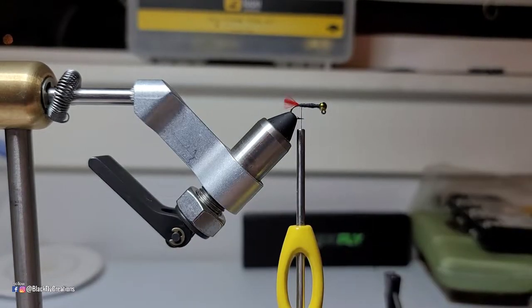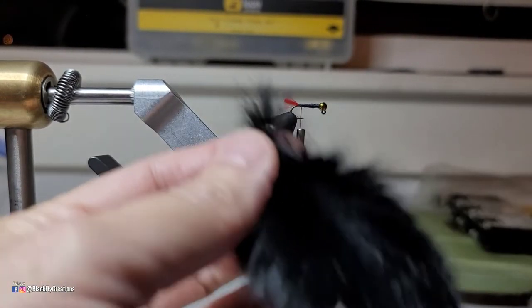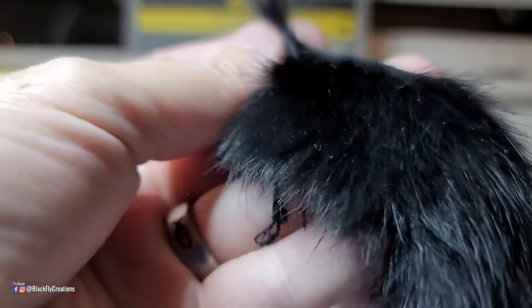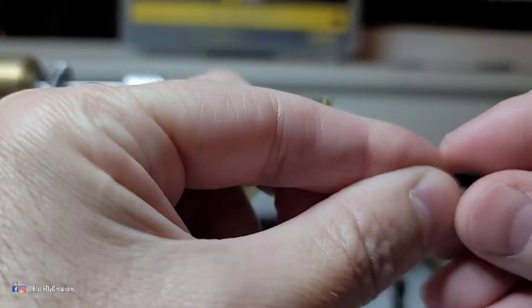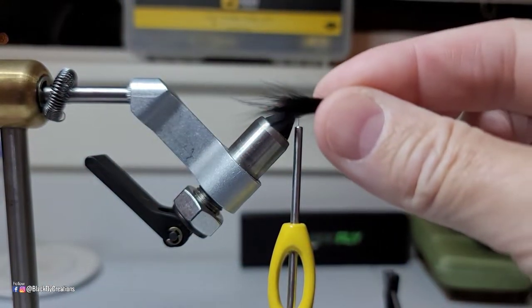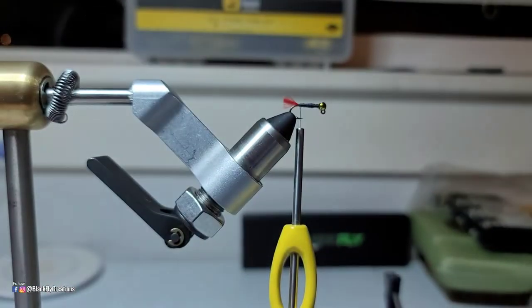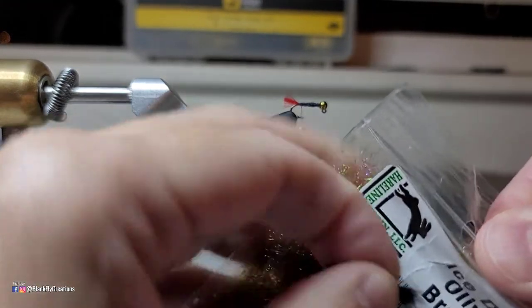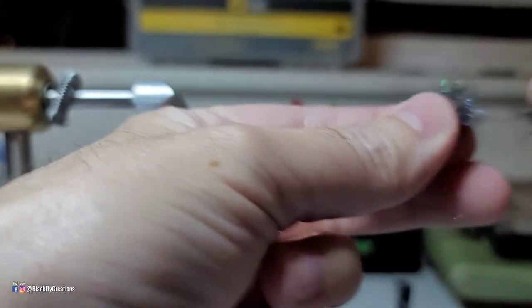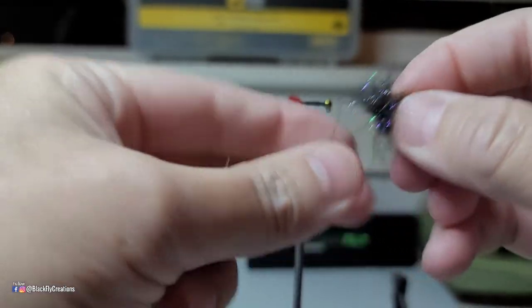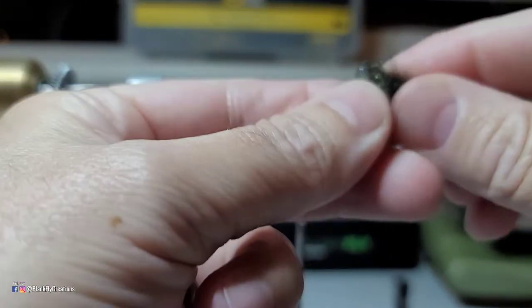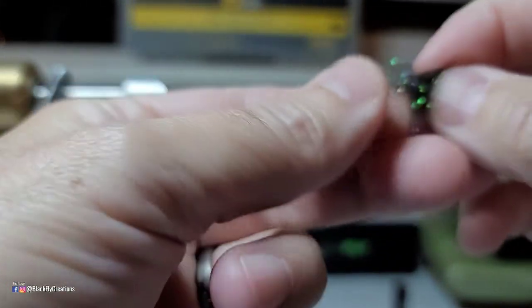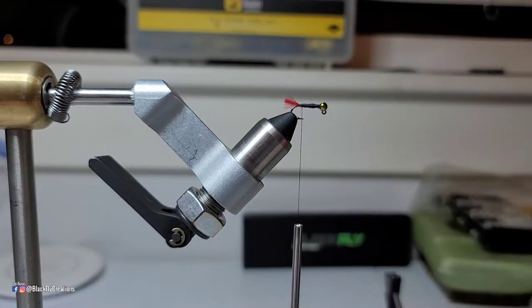So next guys what I'm going to do is I'm going to take and mix some black bunny fur with some olive ice dub. I've got about a quarter inch of fibers. I'm going to take some of my ice dubbing, just want to mix it up real good with your fingers. So you can see it's creating a nice dark dubbing, it has some olive crystal flash in it.